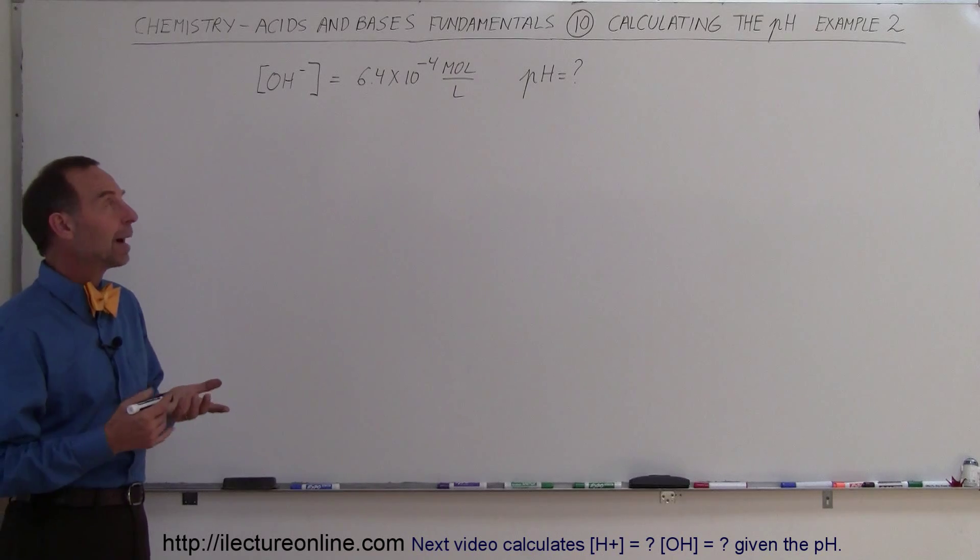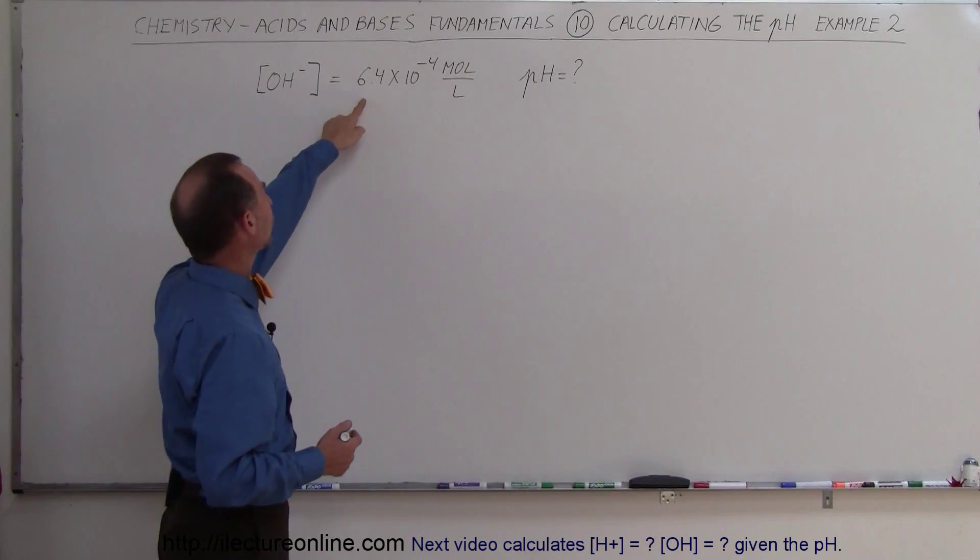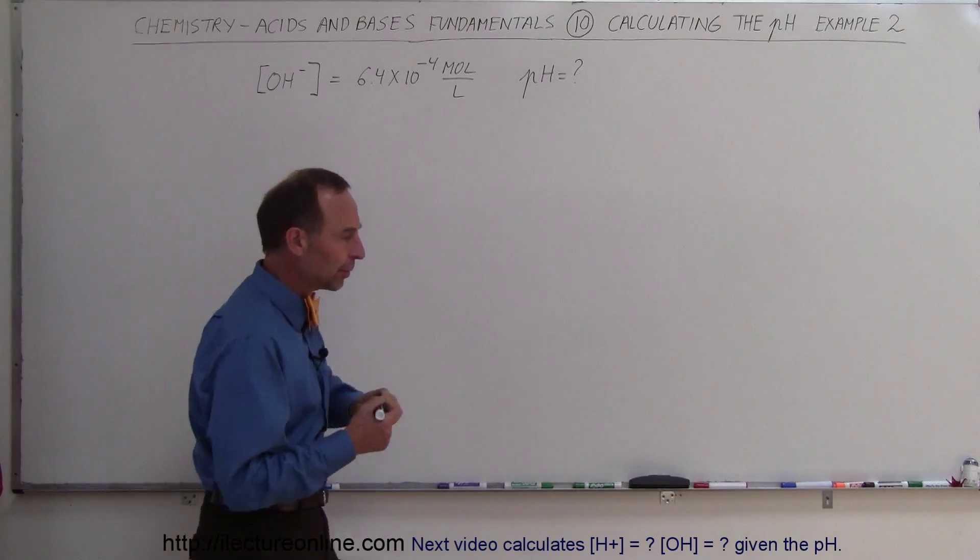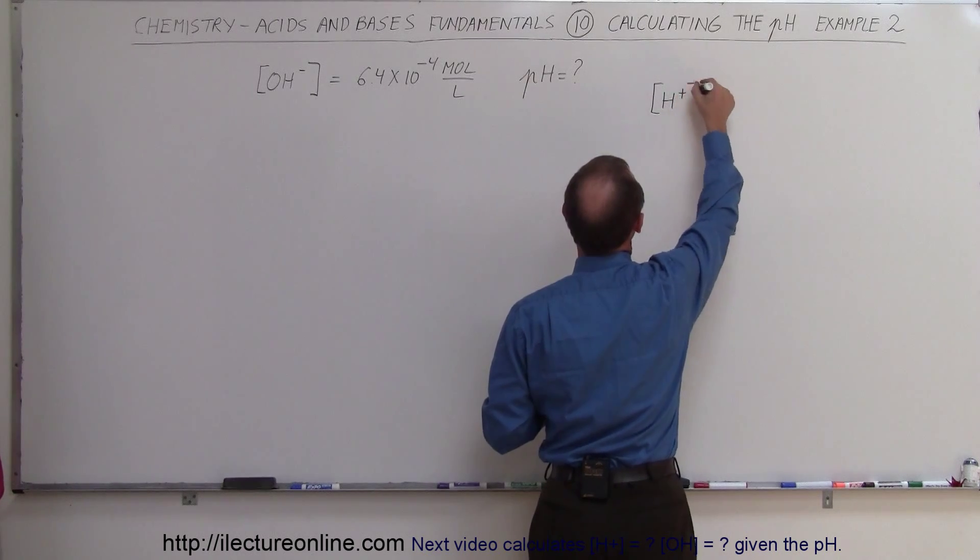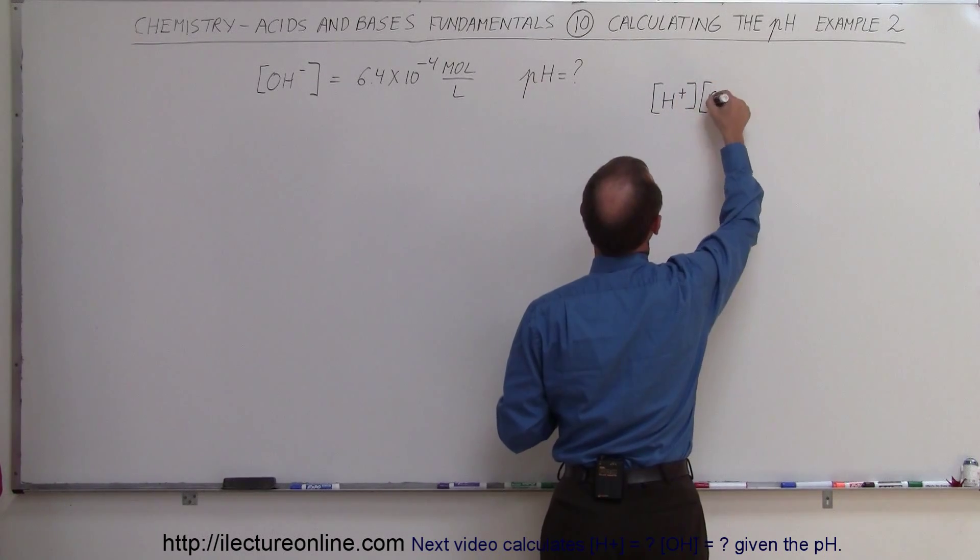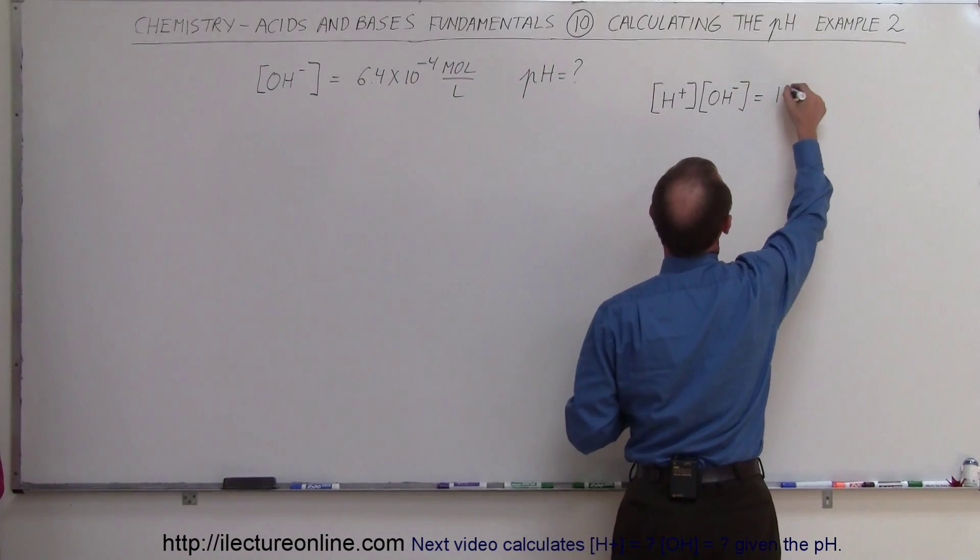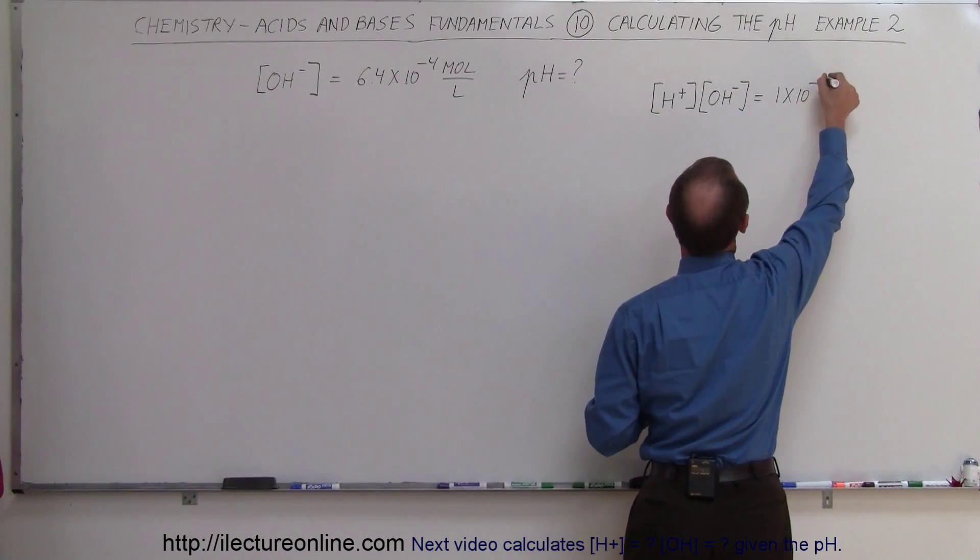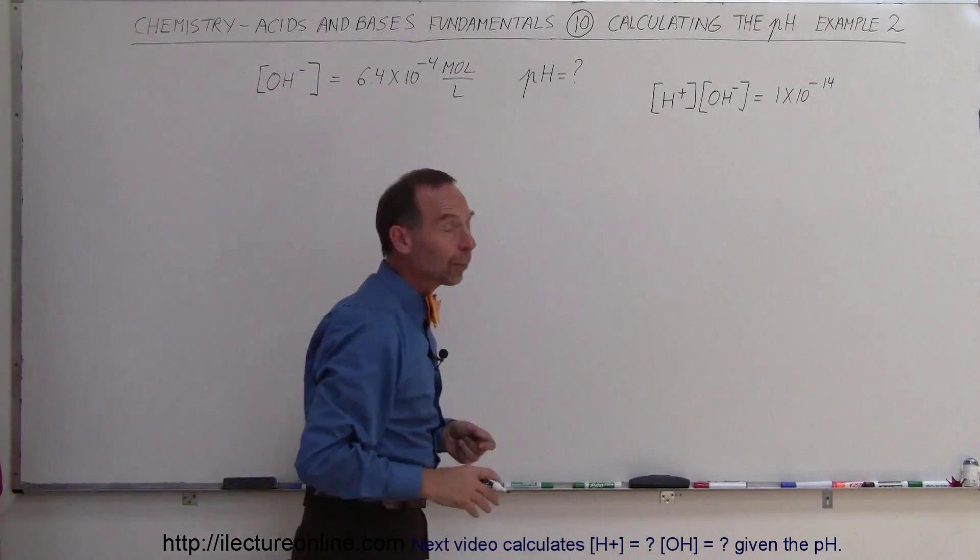Well, there's different ways of going about it, but first of all, I think what we could do is say, if we're given the concentration of the hydroxide ion, I remember a relationship that the product of the concentration of the hydrogen ion times the concentration of the hydroxide ion always has to equal 1 times 10 to the minus 14, and that was the constant.